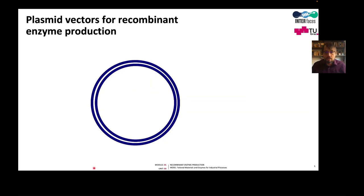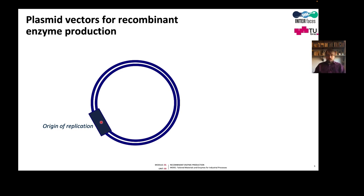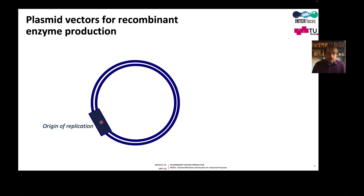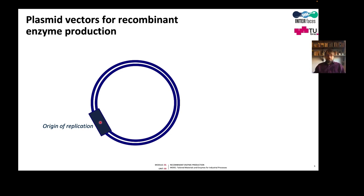Let's have a look at the typical composition of a plasmid. A plasmid is a circular DNA molecule of a few thousand base pairs in length. All plasmids have an origin of replication, which is needed to initiate the amplification of the plasmid during cell division. Without such an origin, the plasmid will not be amplified and will be lost. The origin of replication is a signal sequence, and sometimes also contains genes of regulatory proteins that bind to the signal sequence and recruit the DNA polymerase, leading to the initiation complex of replication.